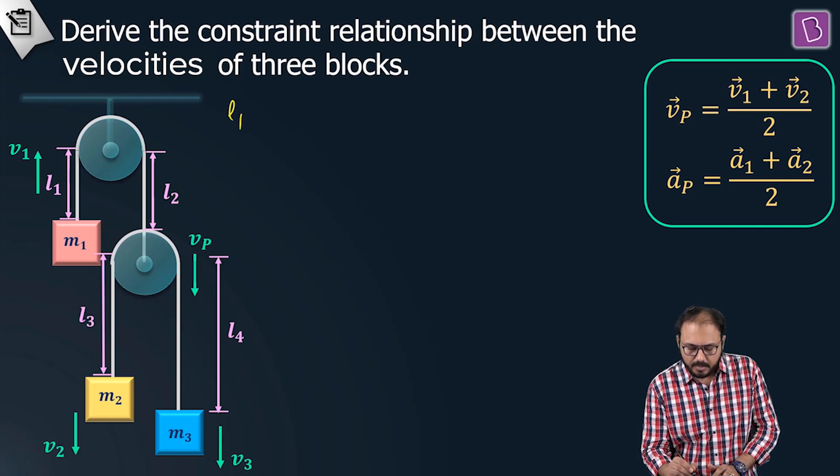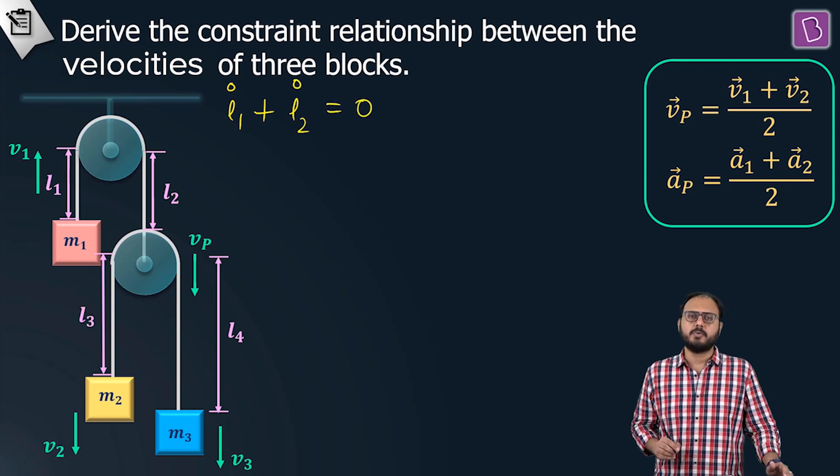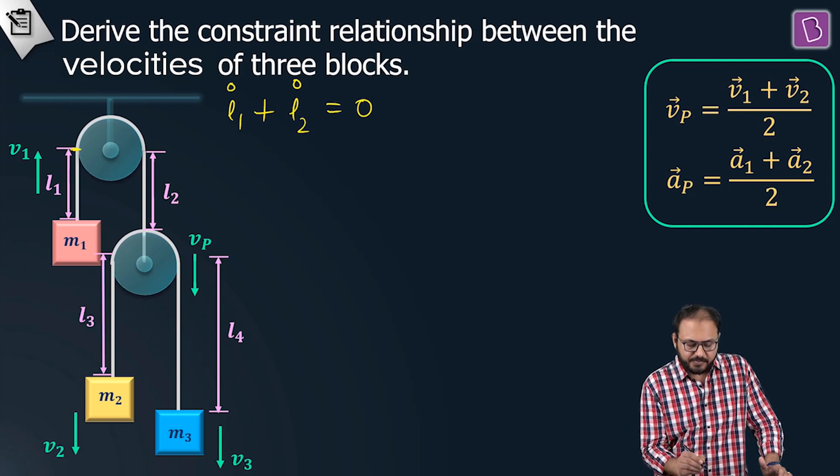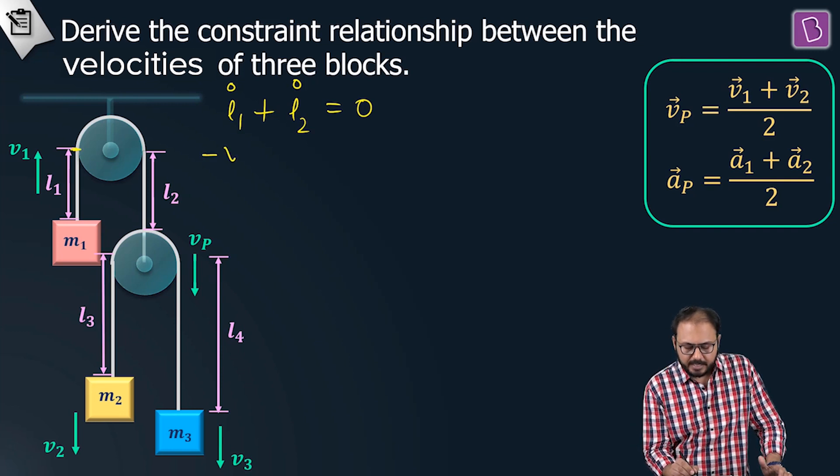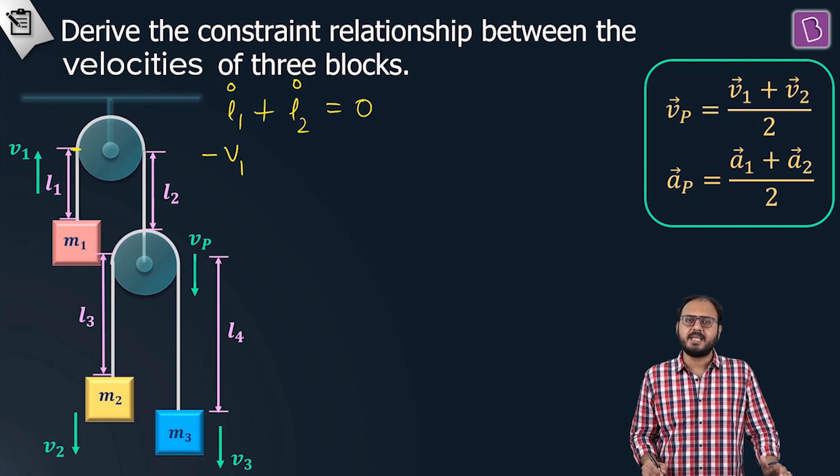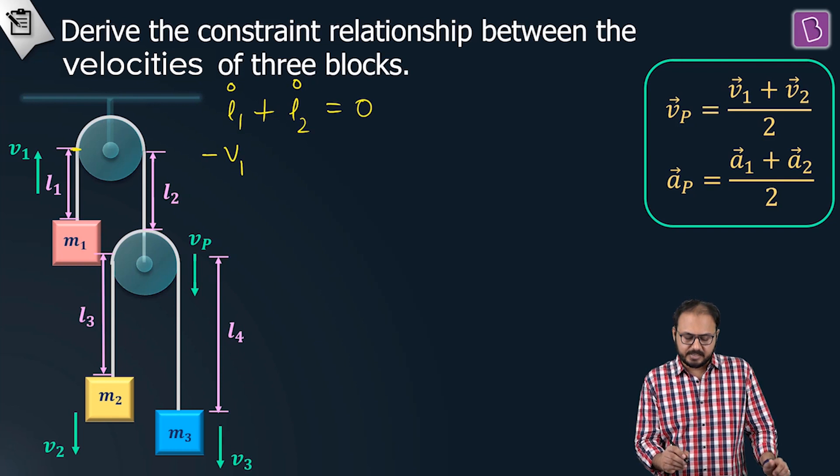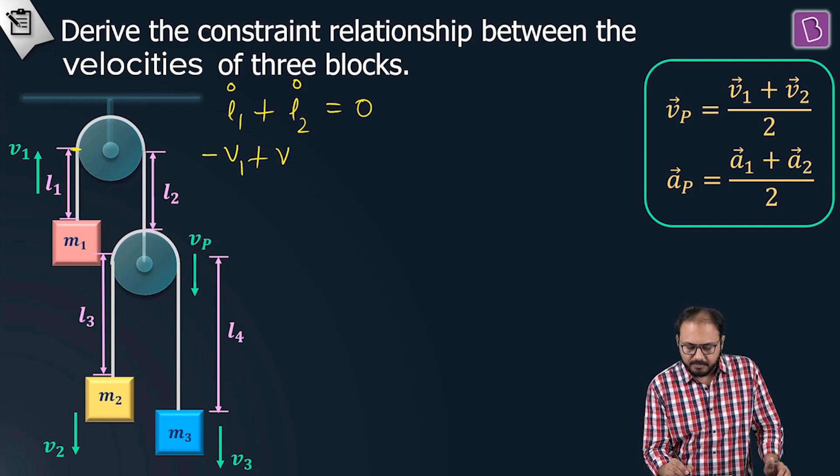First, we start with l1 and l2. l1 dot plus l2 dot is equal to zero. l1 dot: upper point is fixed, lower point goes up, and the rate is minus v1. Why minus? Because if block m1 goes up, the l1 part decreases. And l2 part is vp.